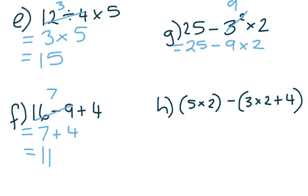Then we have a subtraction and a multiplication. BIMDAS tells us we do multiplication before subtraction. So 9 times 2 is 18. We would have 25 take away 18 and that gives us 7.